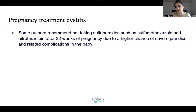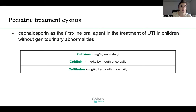As for pediatric treatment of UTI, cephalosporins do very well and are the first-line agents in children without genitourinary abnormalities. These include cefixime, cefdinir, and ceftibuten orally. I'm not covering the IV options because we are primary care — cephalosporins are really good for children.